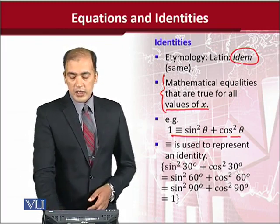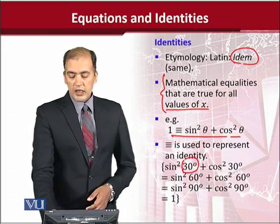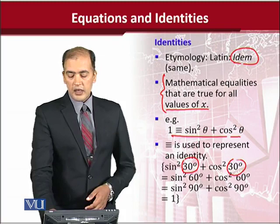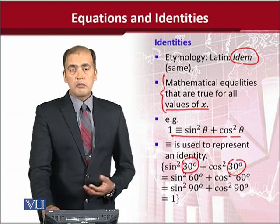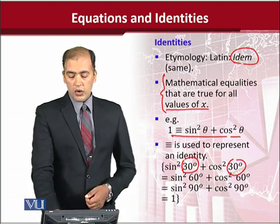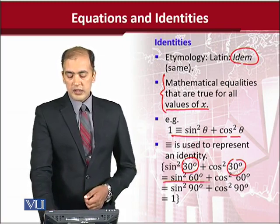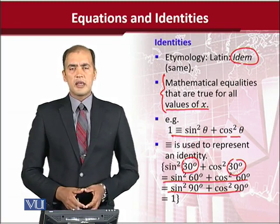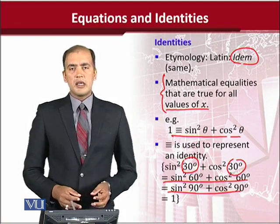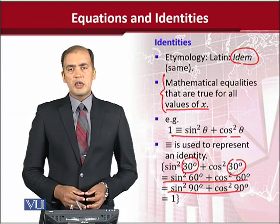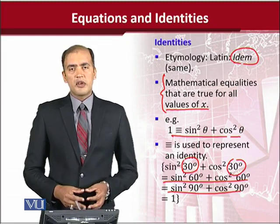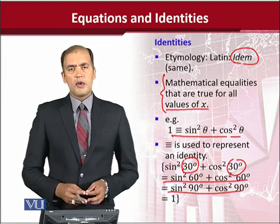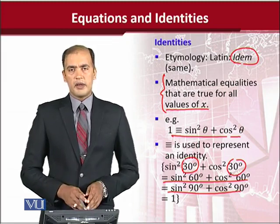For example, if I put the value of the angle θ as 30°, or try 60°, or try 90°, or any other angle, the sum of the squares of these trigonometric ratios will always sum up to 1. This is the famous trigonometric identity sin²θ + cos²θ = 1.